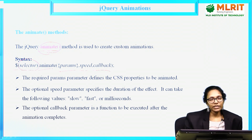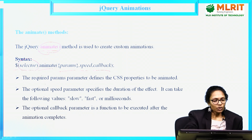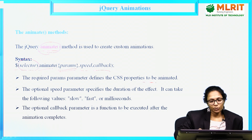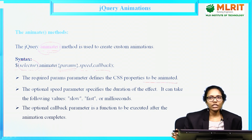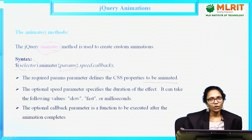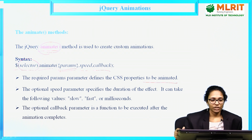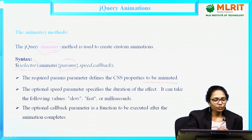These are the three parameters the animate function will take. The first parameter, params — the required params parameter defines the CSS properties to be animated. Animation means we are doing some animations, whether you are increasing the size, moving the object, or changing the background color of that image. All the CSS styles you need to provide in the first parameter within the curly braces.